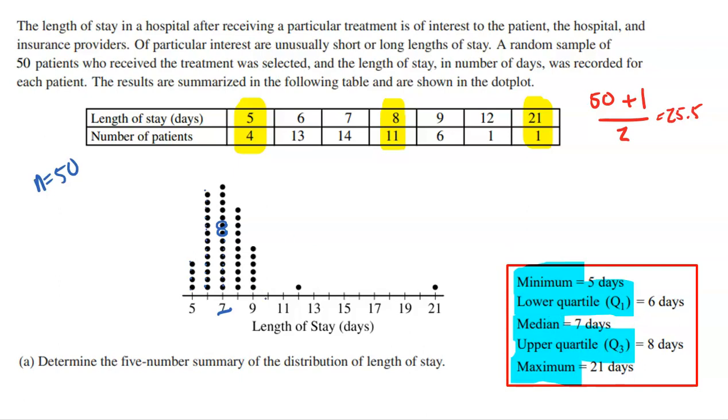Then the lower quartile is the middle of the bottom 25 values. There's 25 numbers at the bottom, 25 numbers at the top, 50 splits half and half. So the middle of 25 would be the 13th value. So if you count to find the 13th value, you find out that that's six. And then if you count from the top, the middle of the upper 25 values would be the 13th value from the top. Counting from the top, there we find out that the middle of the top half is eight days.